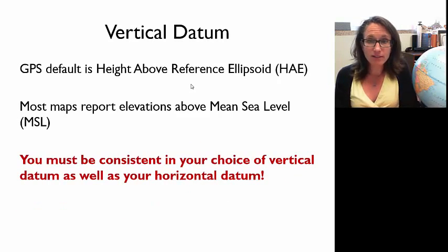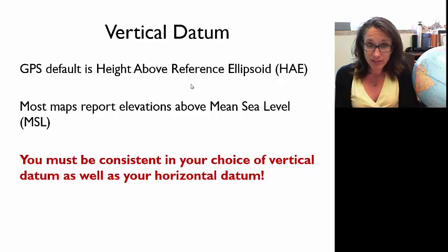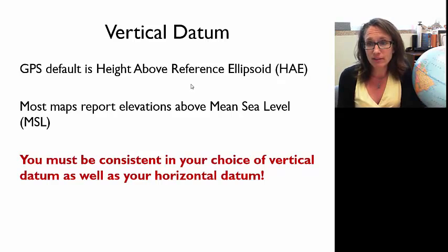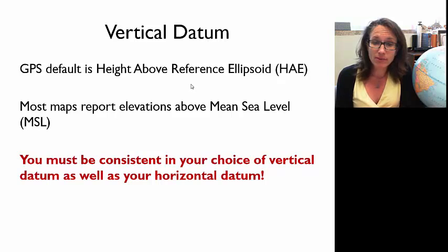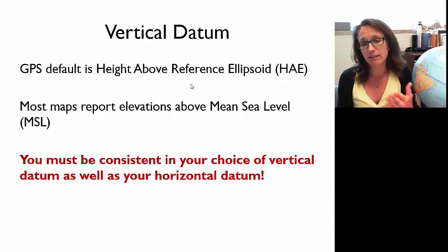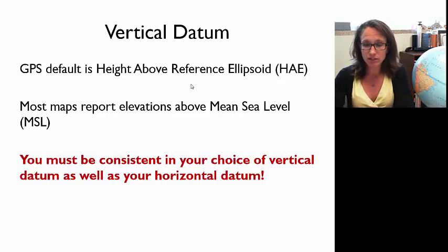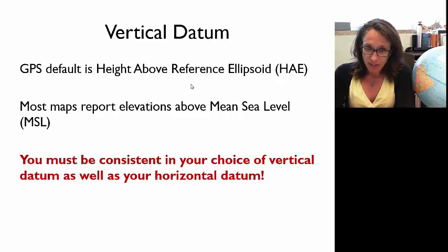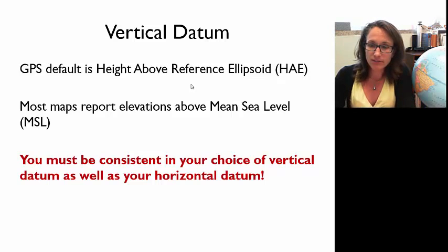We've been talking about horizontal datums, but we also have to worry about the vertical datum. The GPS default is the height above the reference ellipsoid, acronym HAE. Many maps will report elevations above mean sea level, which is usually above a geoid model. You need to be consistent and make sure you convert to match your elevation, using the correct vertical datum and making adjustments if necessary.